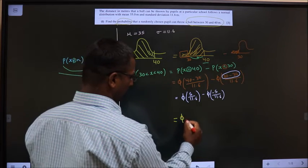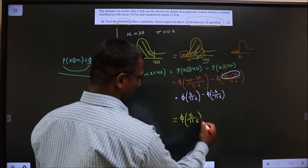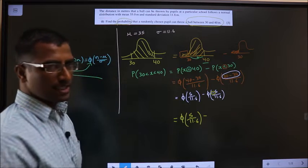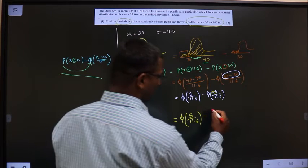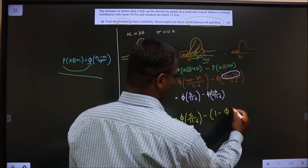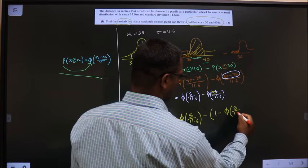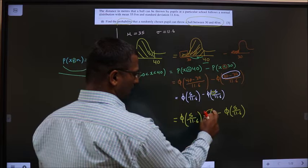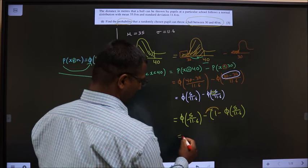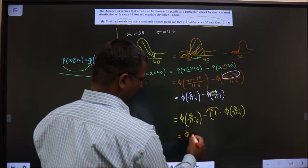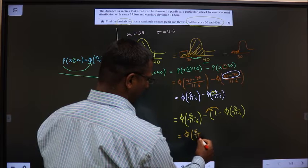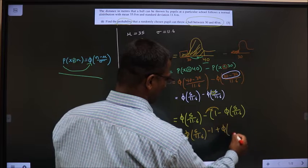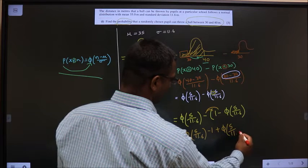Here it is phi of 5 by 11.6 minus. Now, how do I make this negative to positive means by doing 1 minus. 1 minus phi of 5 by 11.6. Now, open up the bracket. So, I get phi of 5 by 11.6 minus 1 minus of minus plus. Phi of 5 by 11.6.